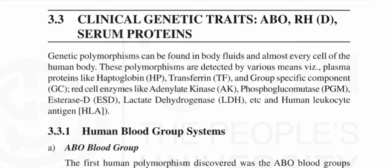Genetic polymorphism can be found in body fluids and almost every cell of the human body. These polymorphisms are detected by various means, with plasma proteins like haptoglobin, transferrin, and group-specific component, as well as red cell enzymes like adenylate kinase, phosphoglucomutase, esterase, and lactate dehydrogenase.